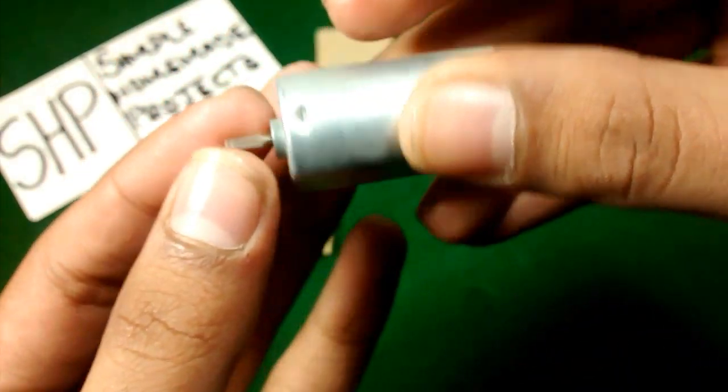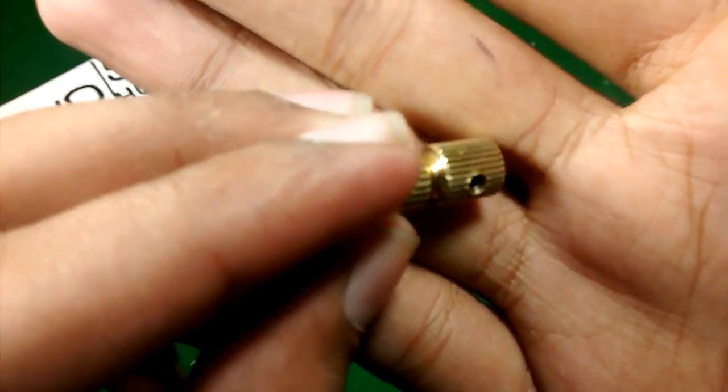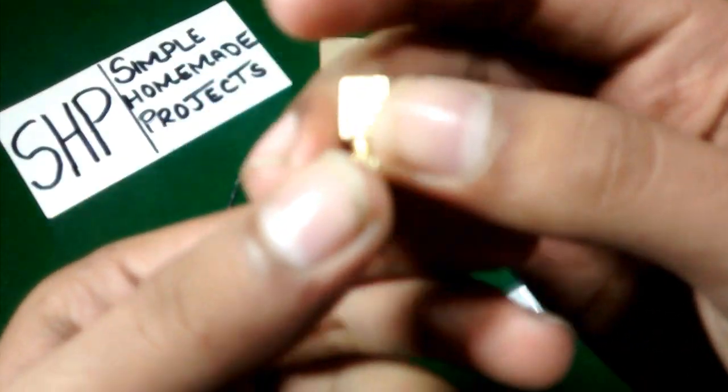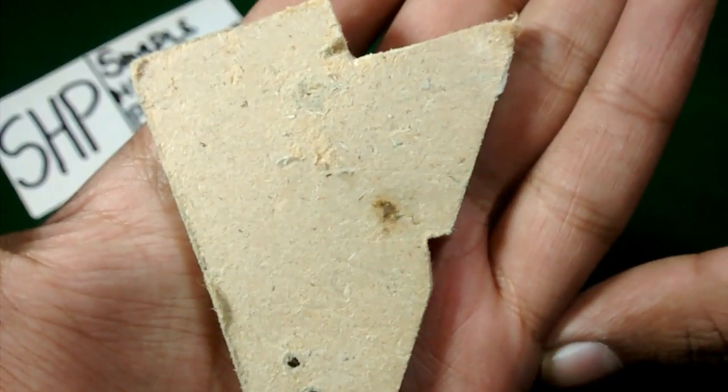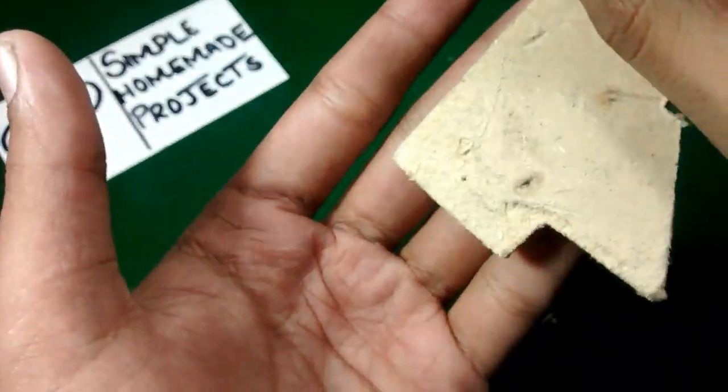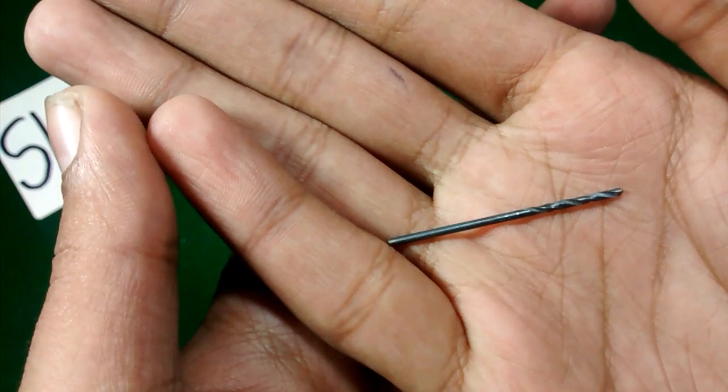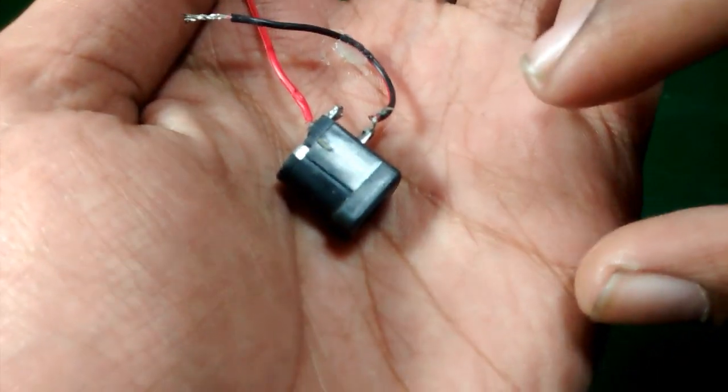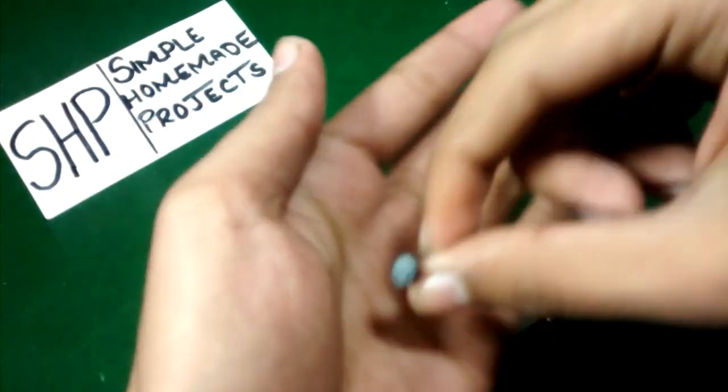You can check the link in the description below. This mini drill chuck I bought from Banggood, and you can also check its link in the description. This piece of wood, a drill bit, DC jack, and a push button switch.